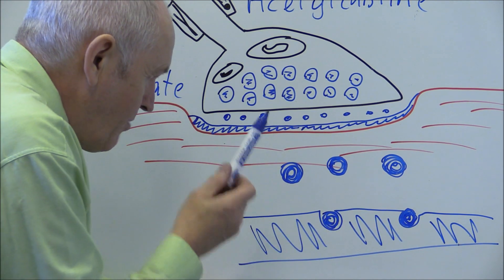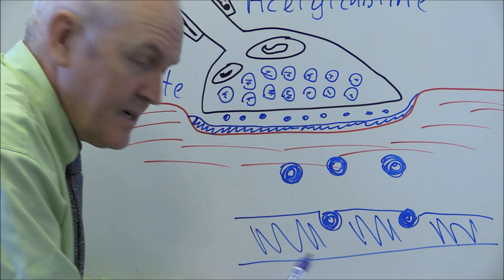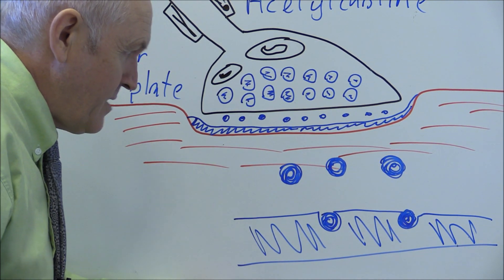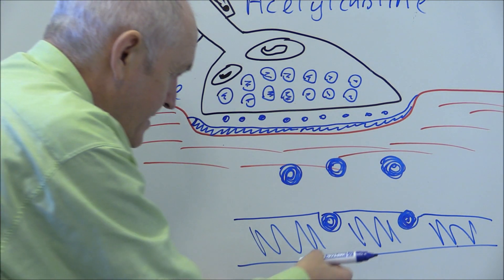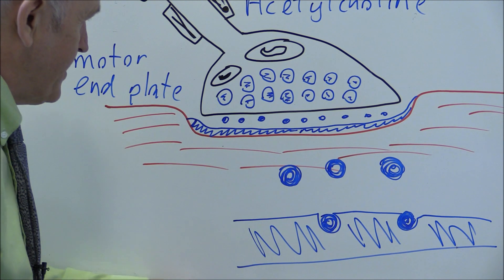And it's the combination, you need both. You need the acetylcholine as the key, you need the receptor site as the lock. You need both of those to stimulate the depolarization that causes the contraction of the muscle.